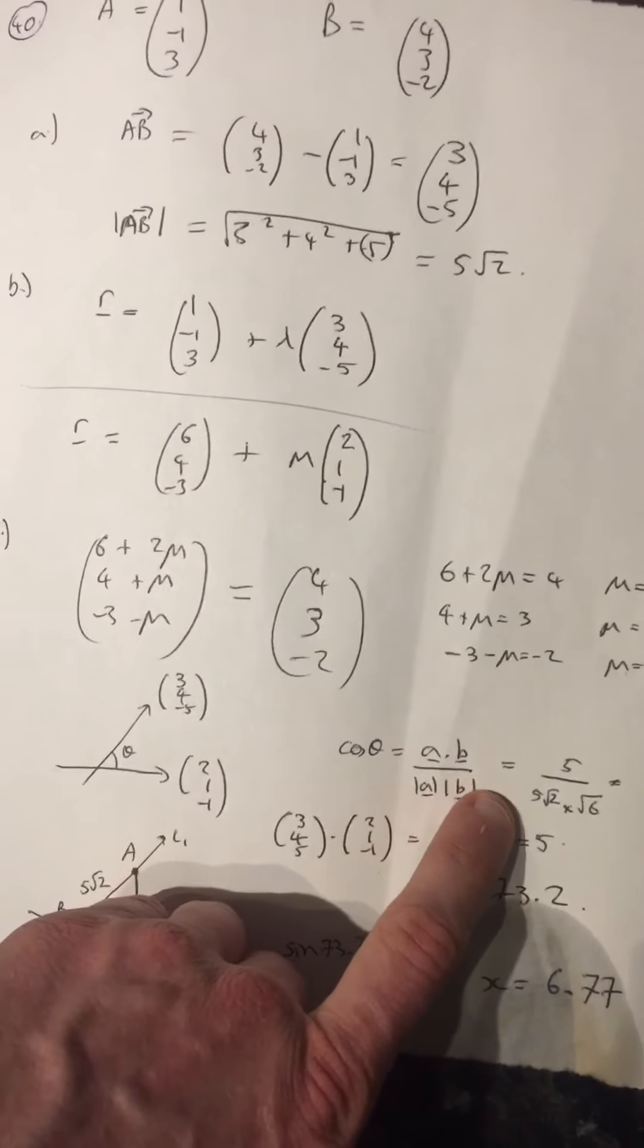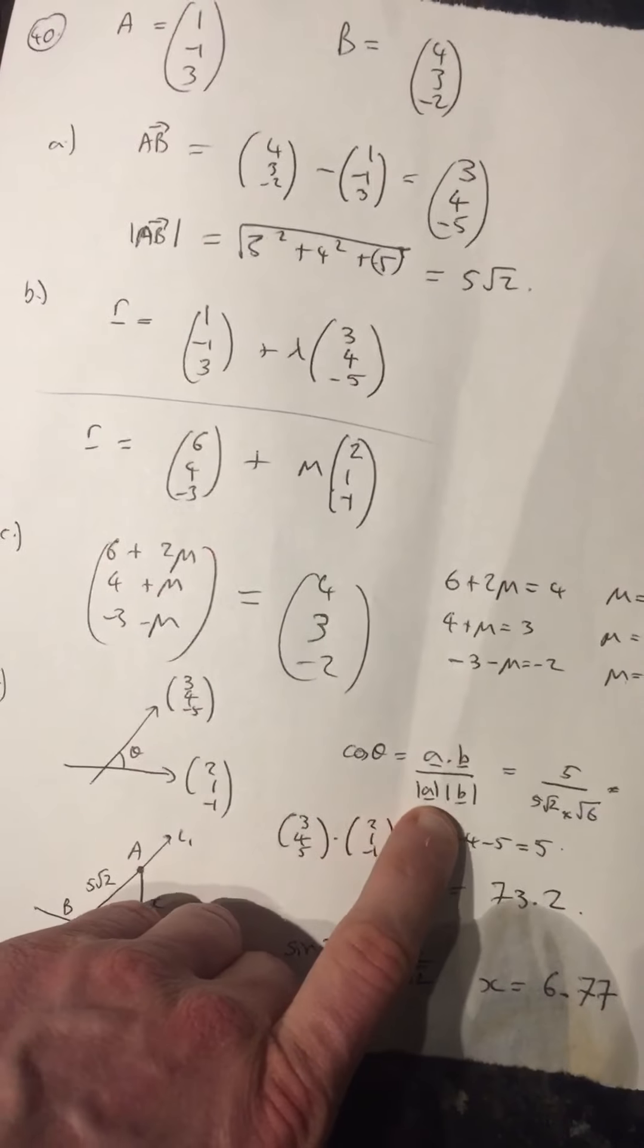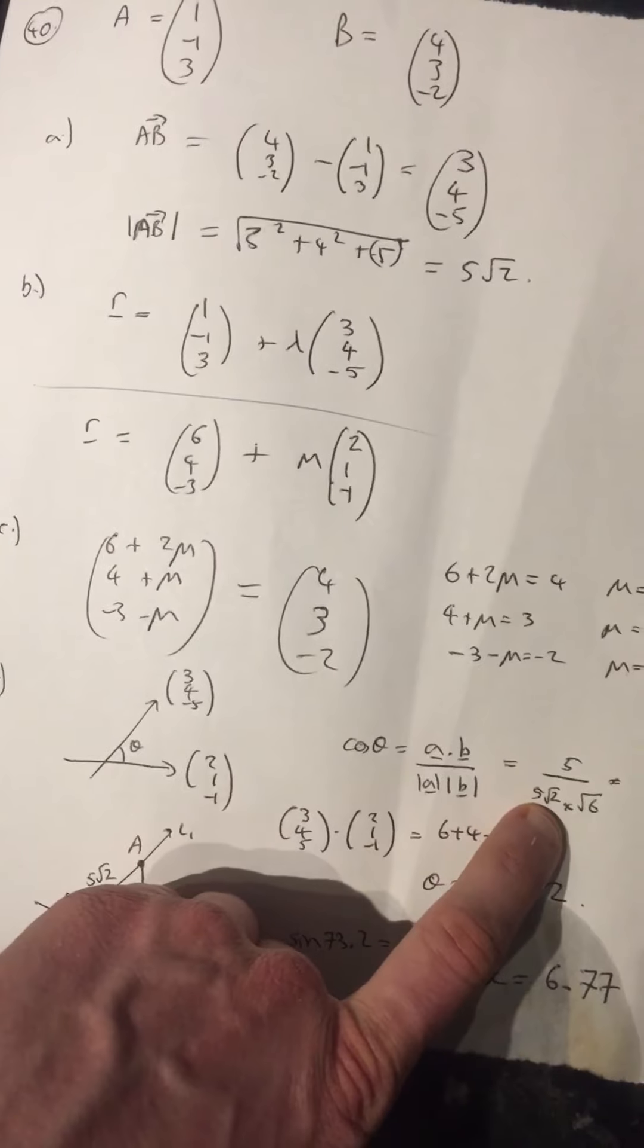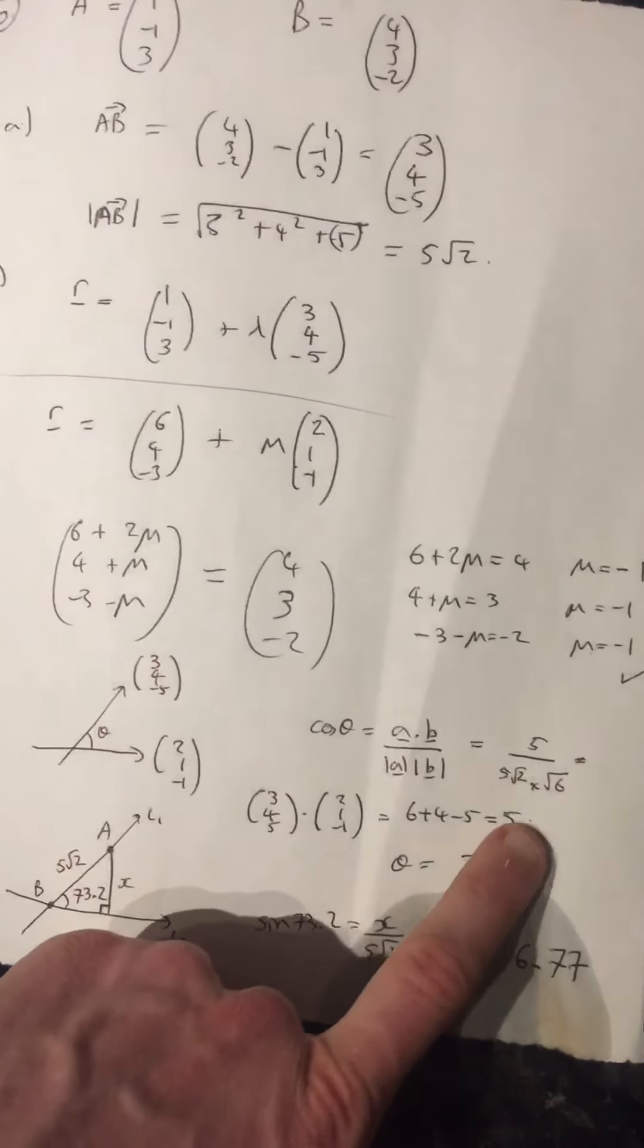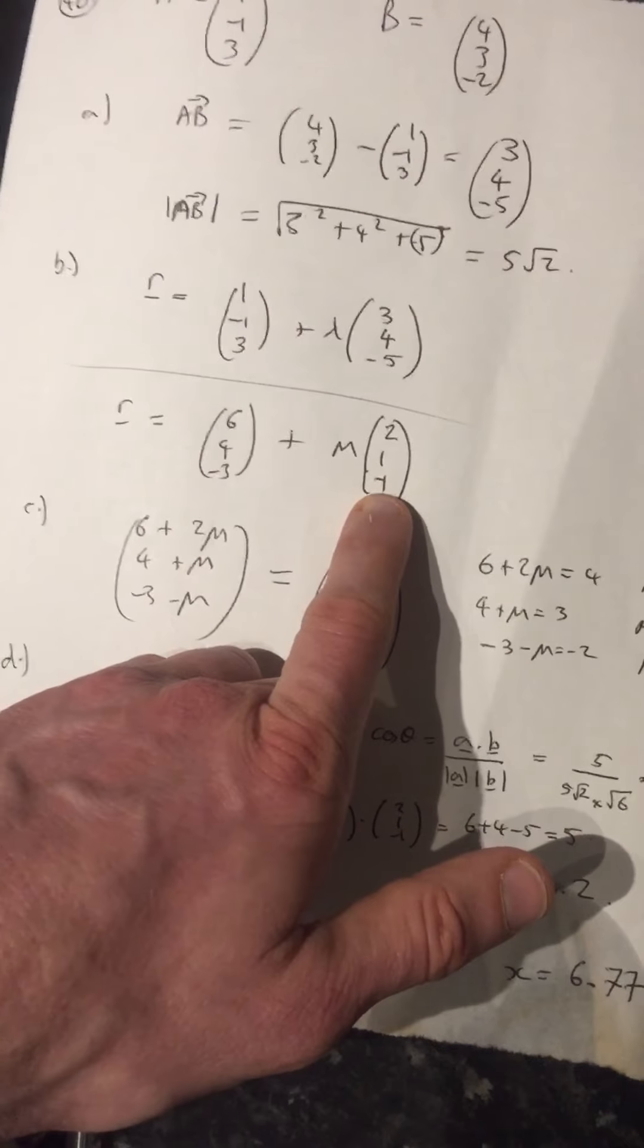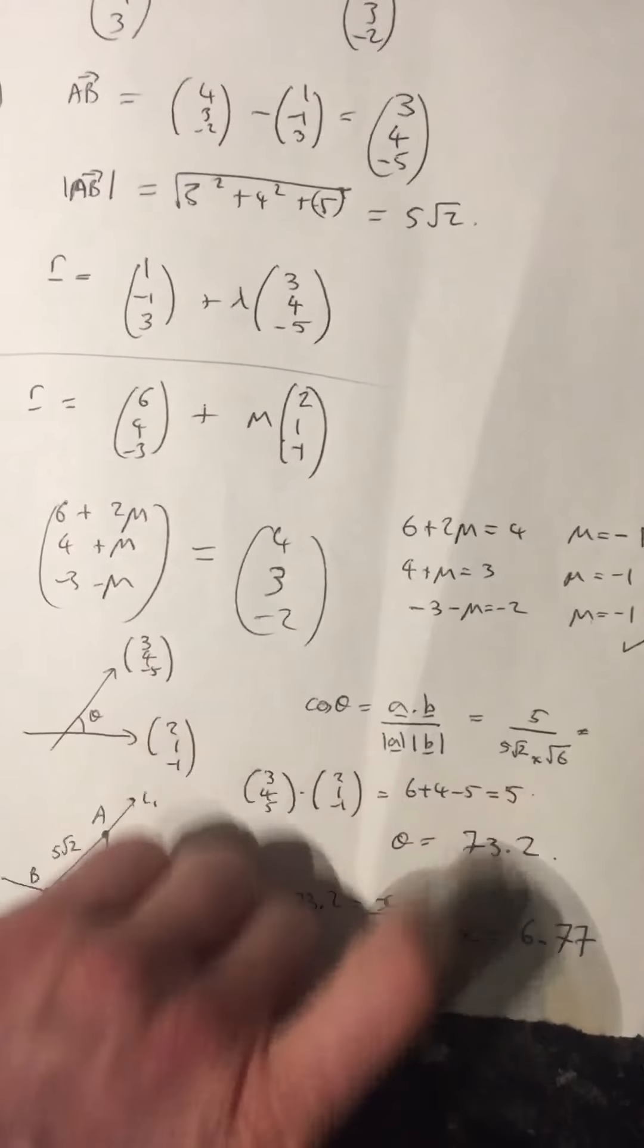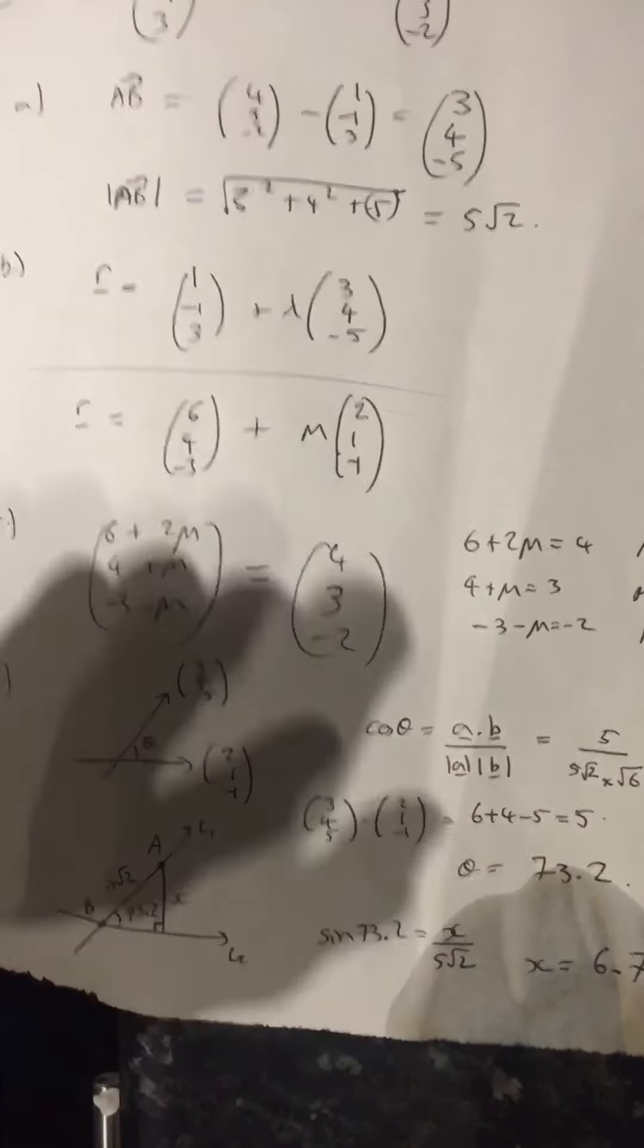Apply the cosine rule. The dot product here. So I get 5 over 5 root 2, which is the magnitude of A that we worked out up here. The magnitude of B is root 6. That's just 2 squared plus 1 squared plus minus 1 squared, all square rooted. If you work out that, you get the angle as being 73.2 degrees. Just ignore the coffee stain there.